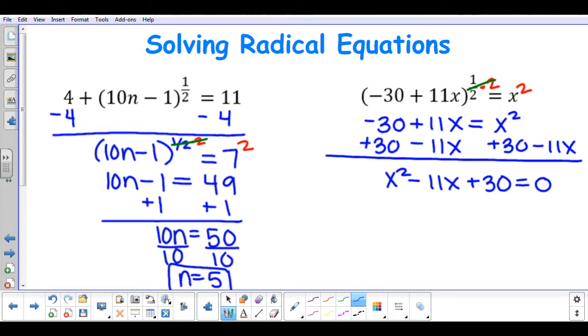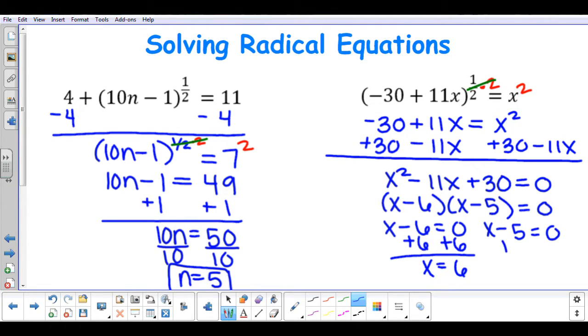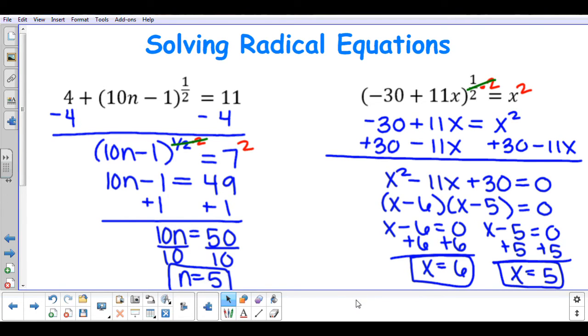Now I am going to factor this expression. I am going to look for factors of 30 that add up to a negative 11. So x subtract 6 and x subtract 5. I am going to set both of these terms equal to 0, and I am going to solve them. I get two answers, x equal to positive 6 and x equal to positive 5.